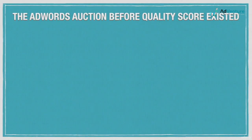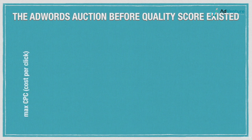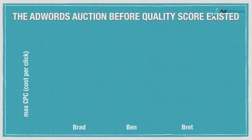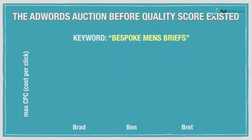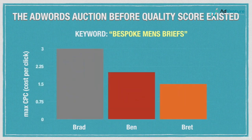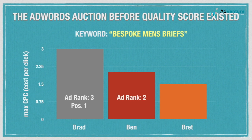Quality score was introduced in 2005, and up until then the AdWords auction was a really simple thing. The only thing that really mattered was your max cost per click, or CPC, for any given keyword — how much you told Google you were willing to pay for an ad click triggered by a specific query. Let's take a look at an example auction. Let's say Brad, Ben, and Brett all run online shops that specialize in custom-tailored men's briefs. Each of them tells Google to show their ads when someone searches for 'bespoke men's briefs.' Brad sets his max CPC at $3, Ben sets his at $2, and Brett's only willing to pay about $1.50 per click. So back in the early days, Brad would win the top ad slot — position 1 — since he had the highest max bid. Ben would take the second spot, and Brett would take the third spot.